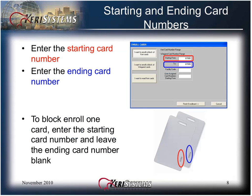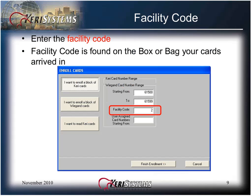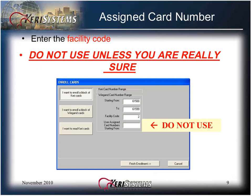Enter the starting card number in the Starting From field and the ending card number in the To field. To block enroll one card, enter the starting card number and leave the ending card number blank. Enter the facility code — this is found on the box or bag your cards arrived in and cannot be determined by visually looking at your cards. If desired, enter a beginning assigned card number. This is an optional separate card number that you can define; assigned card numbers will be assigned in sequential order to all blocked cards enrolled. Do not use this field unless you are really sure about it — in most cases, leave this field blank.